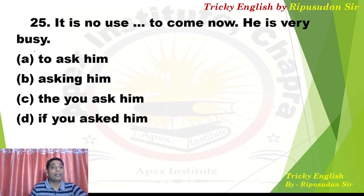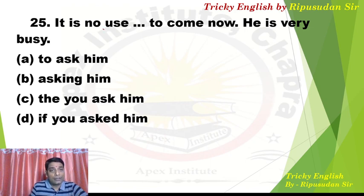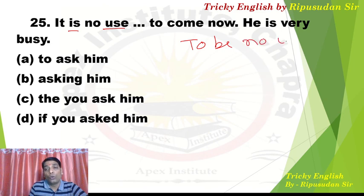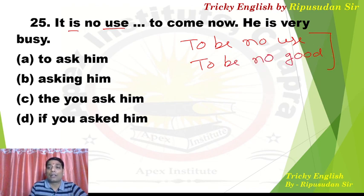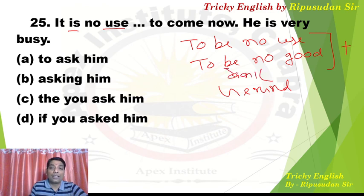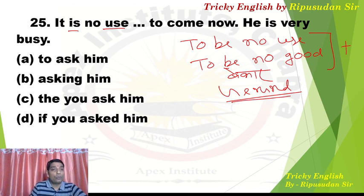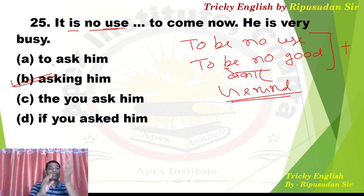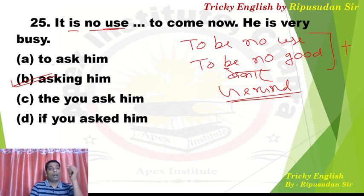This is the last question of the set — Question 25: 'It is no use dash to come now. He is very busy.' The word 'use' gives a hint. 'To be no use' or 'to be no good' — both are used in the sense of being useless or worthless. After these expressions, a gerund is used — not infinitive. Since we see 'is no use', the answer must be a gerund. Answer is B — 'asking' — 'It is no use asking him to come now' because he is very busy.